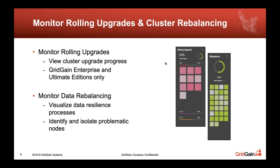A similar visualization serves rolling upgrades — a GridGain Enterprise Edition feature. If you have a cluster and want to upgrade from, say, 8.7.18 to 8.7.19, you can individually upgrade nodes without taking the whole cluster down, doing rebalances step-by-step for a zero-downtime upgrade. This visualization shows the progress of rolling upgrades — which nodes still need upgrading and which version they're on.